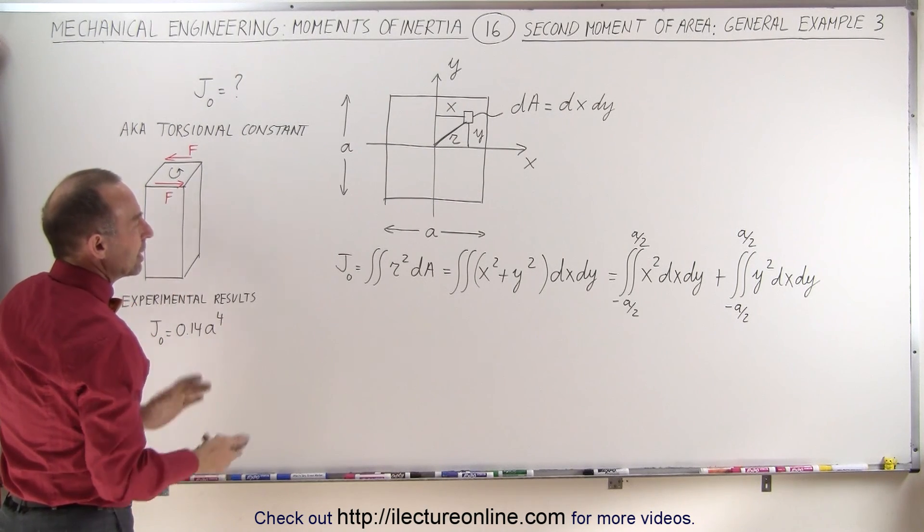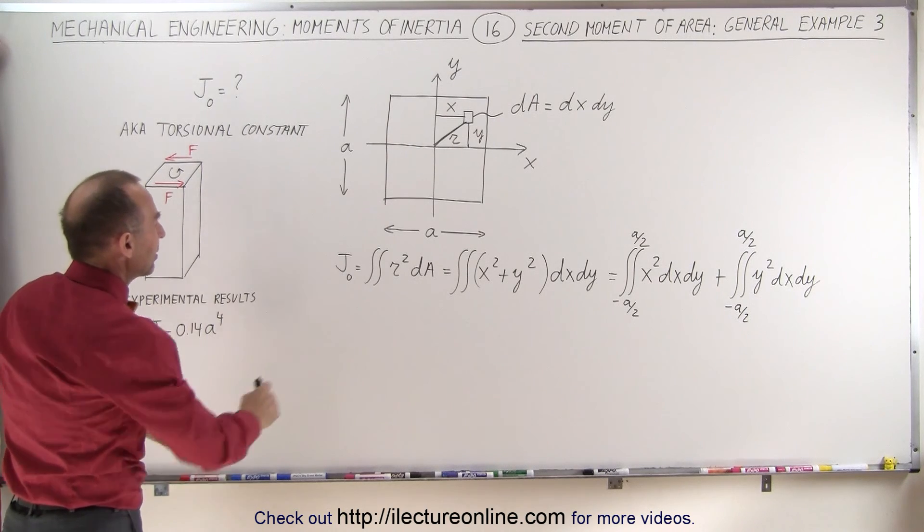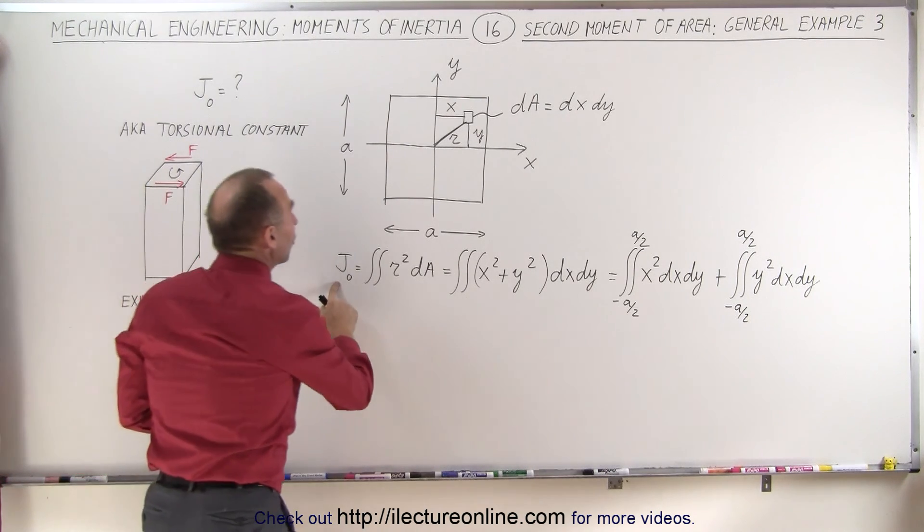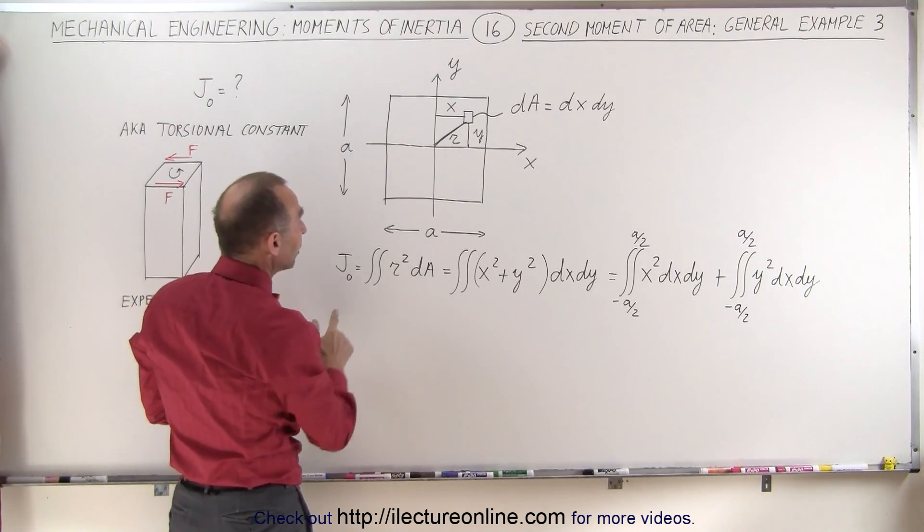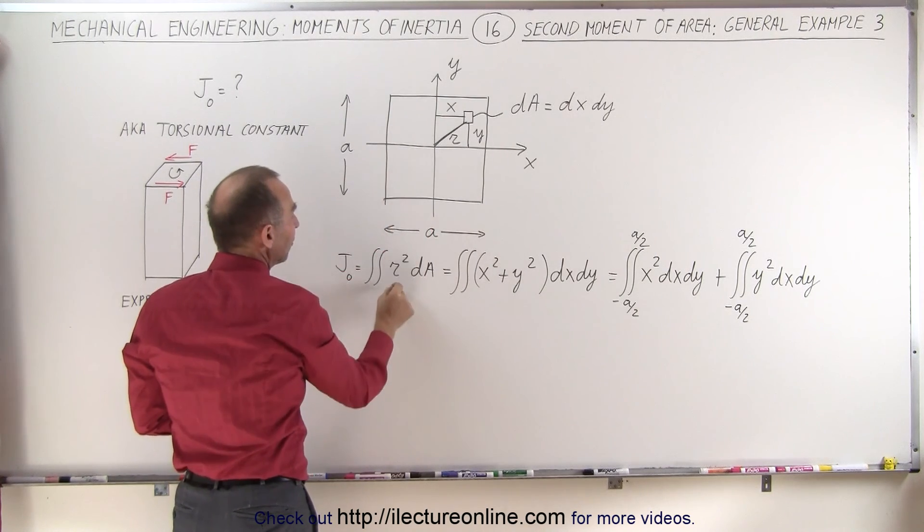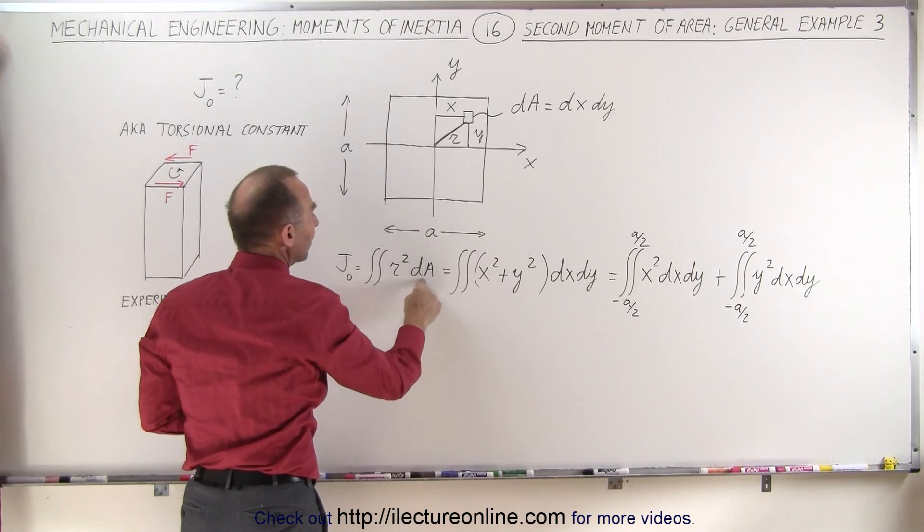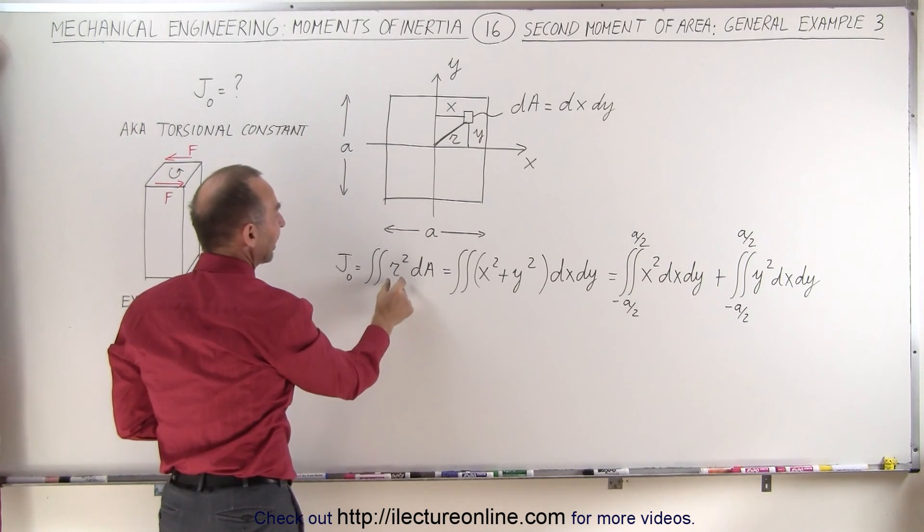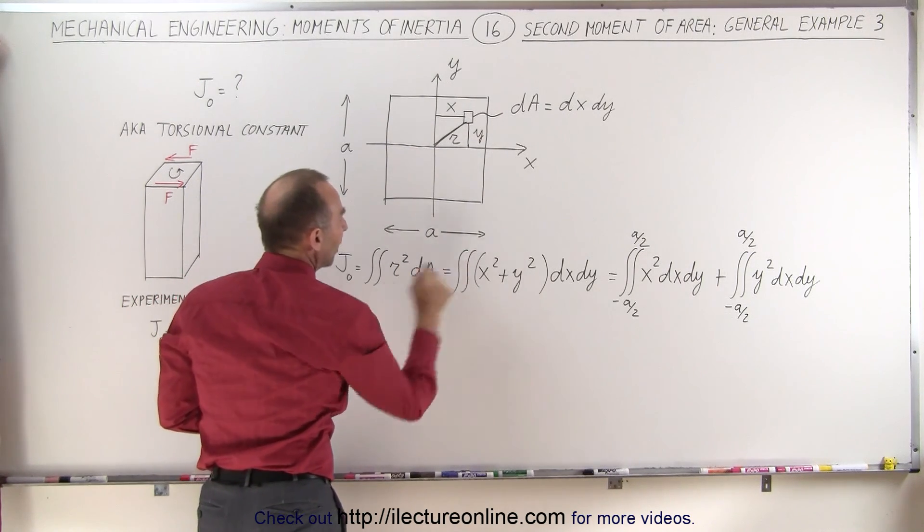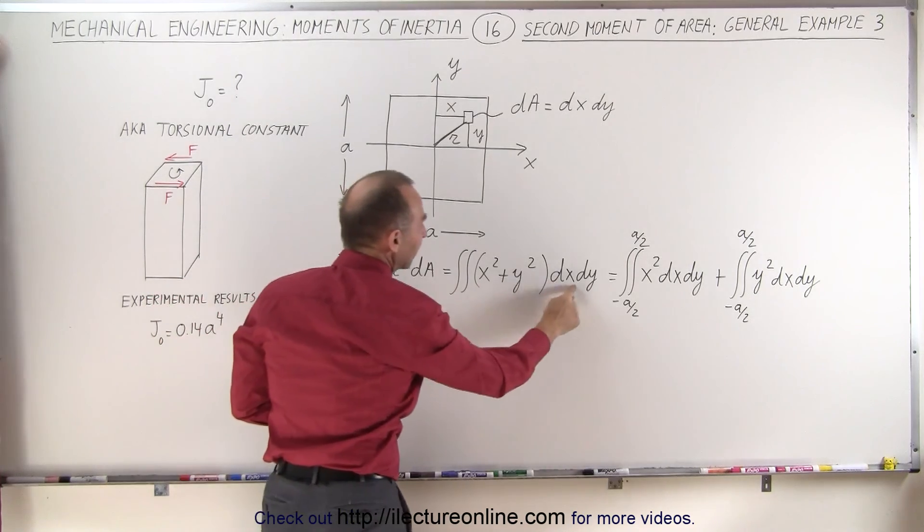All right, we have a general equation here that the second moment of area with respect to the origin is the distance from the area element to the origin squared times dA. We can define that distance squared as x squared plus y squared, and dA as dx times dy.